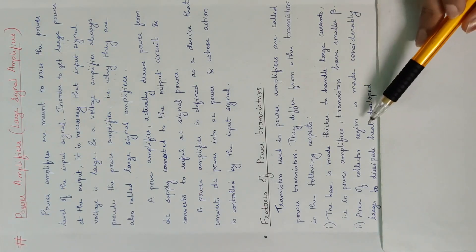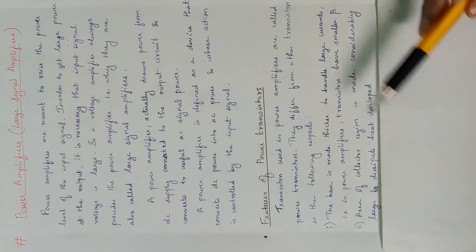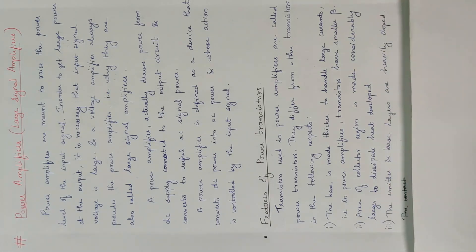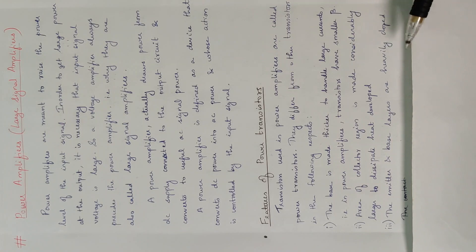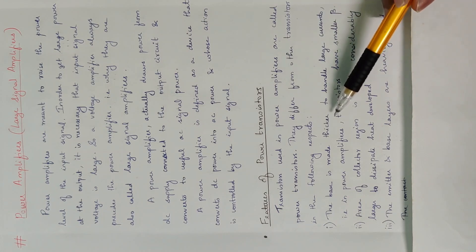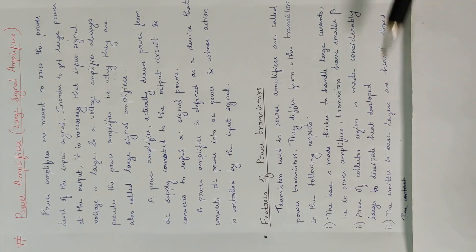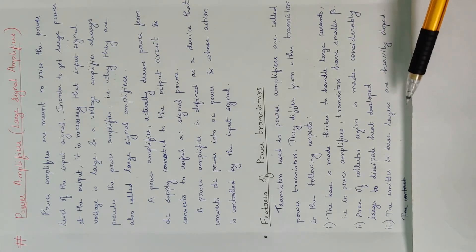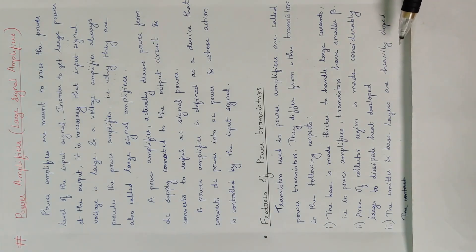Third, the area of the collector region is made considerably large to dissipate the heat developed. Fourth, the emitter and base layers are heavily doped to increase charge carriers and current. These are the basic features of power transistors: thicker base, smaller beta, larger collector region, and heavily doped emitter and base.